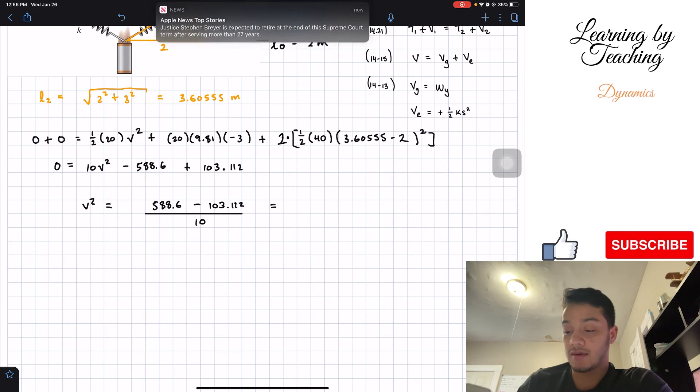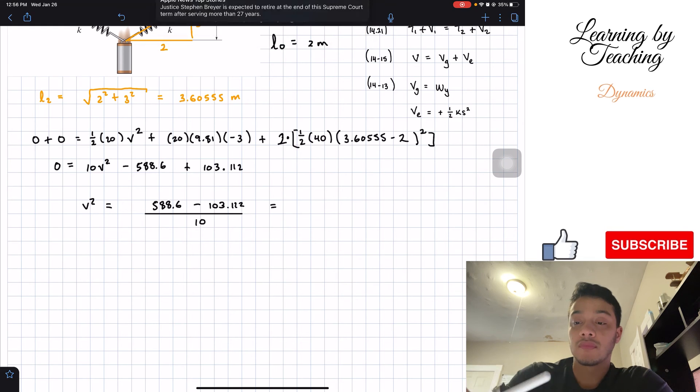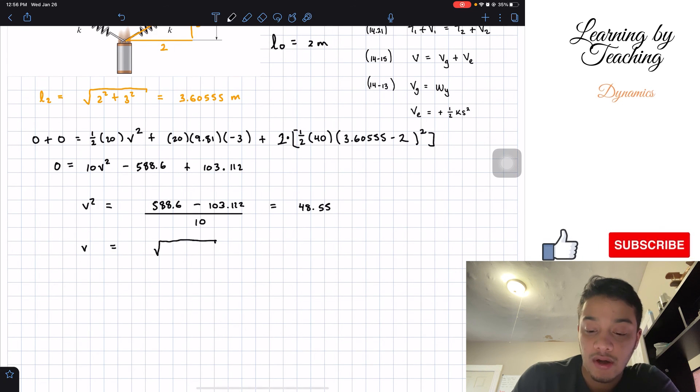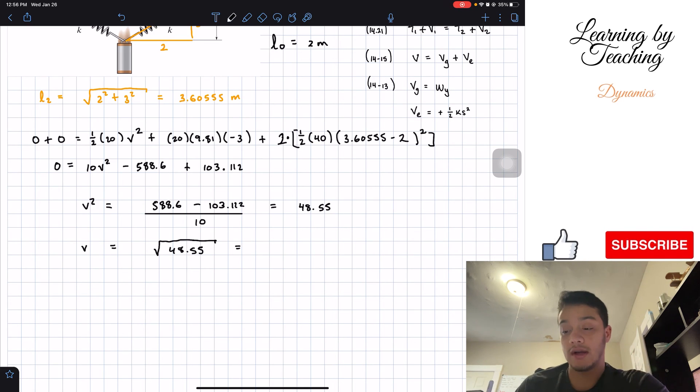We will check how much this is. So we can do 588.6 minus 103 divided by 10, gives me a total of 48.55 if we round it up. Finally, we just need to do the square root on both sides. The square root of 48.55, when we plug that into our calculator, we will get a total of 6.97 meters per second if we round it up to two decimal places.